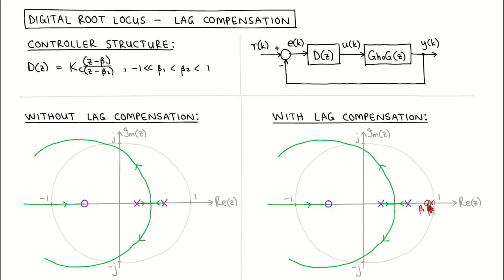Since the controller pole and zero are chosen close to each other, it would look like a pole that is almost cancelled by a zero from the view of the rest of the root locus, which means that the shape of the root locus would not change significantly. We can therefore design the proportional controller to achieve the desired transient response and then add lag compensation to improve the steady state response, with the assumption that the addition of lag compensation does not significantly alter the transient response.